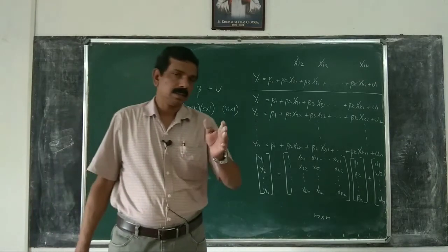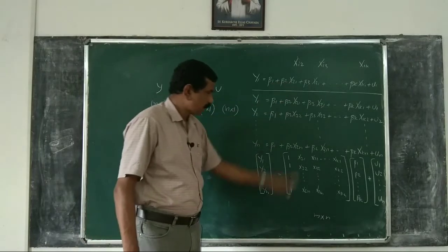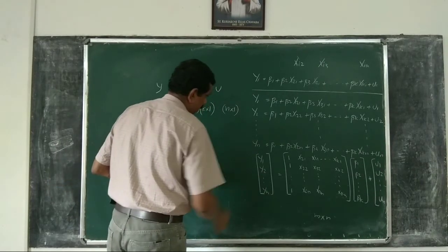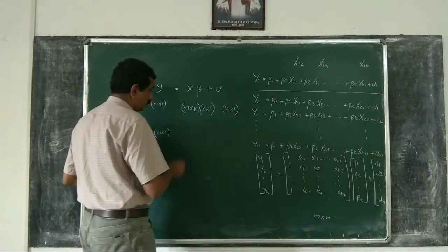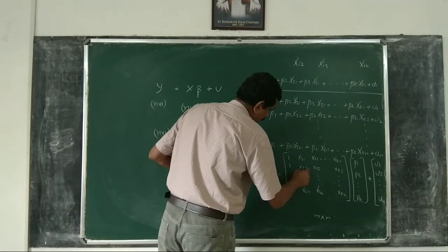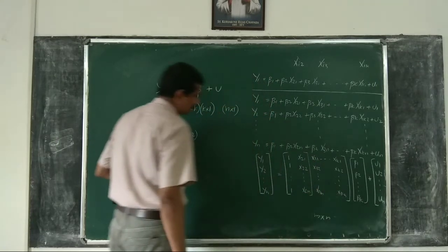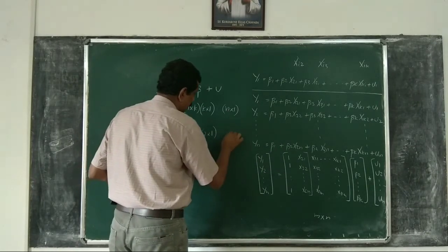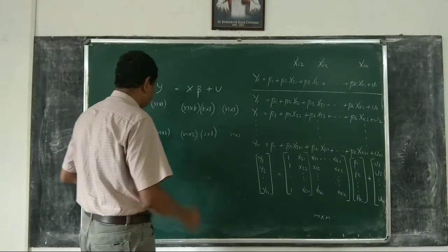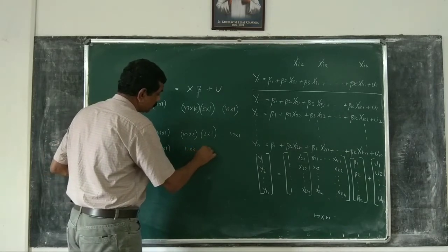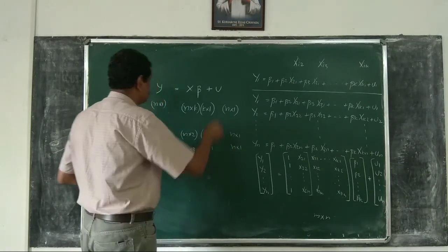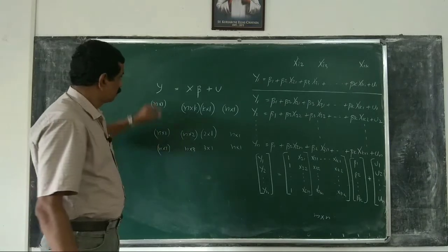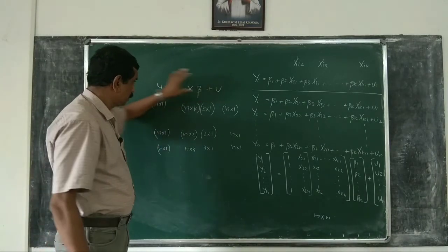When presenting a model in matrix form, suppose it is a 2-variable model. Then y has order n by 1, because the number of observations is the same. X has order n by 2, because there are only 2 columns. Beta has beta1 and beta2, so it is 2 by 1. For a 3-variable model: y is still n by 1, X is n by 3, beta is 3 by 1, and u is n by 1.